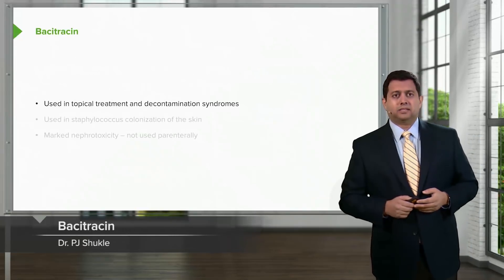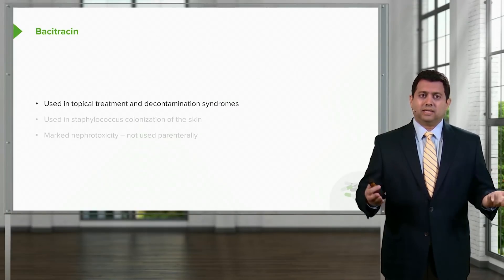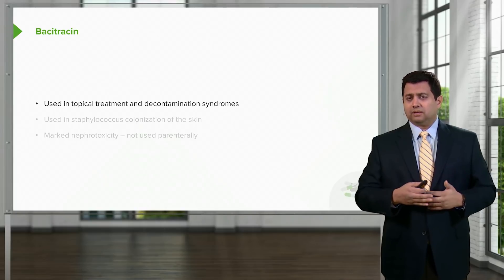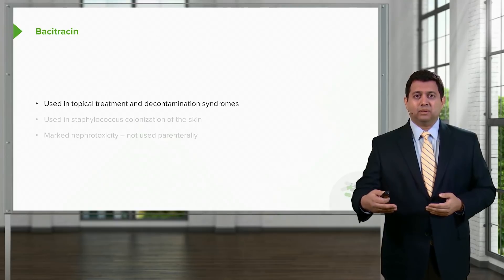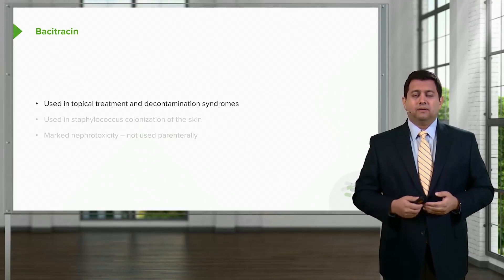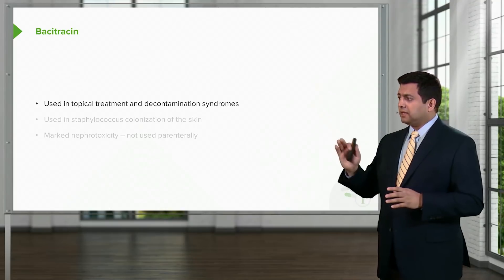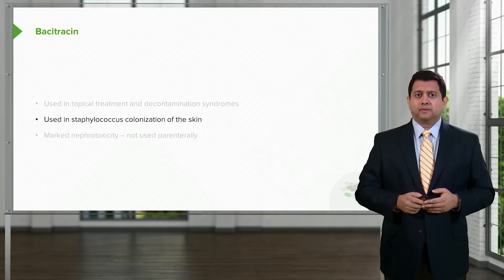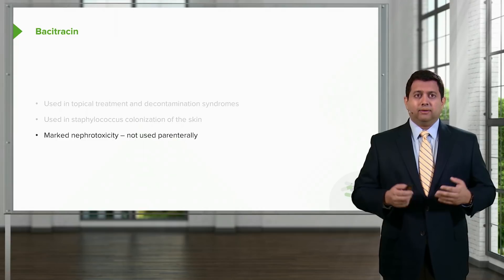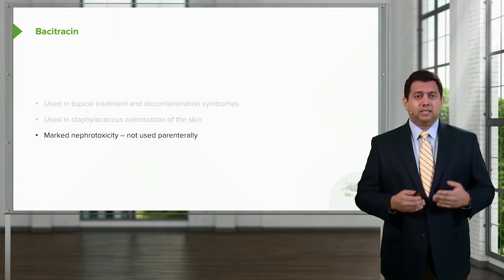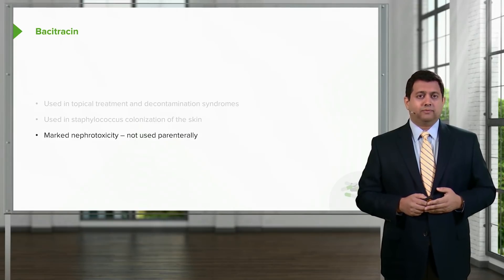Let's talk about bacitracin. It's not often covered in antibiotic lectures, but it's used tremendously in hospitals as a topical treatment and decontamination treatment for things like methicillin-resistant Staph aureus. It's used in staphylococcal colonization of the skin. Bacitracin can cause nephrotoxicity, so it is not used orally or parenterally — only topically for practical purposes.